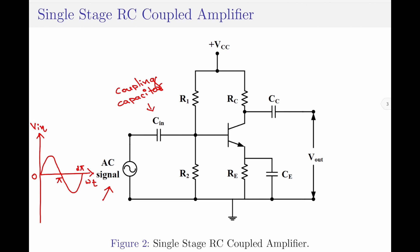The resistors R1 and R2 form the voltage divider network and help in proper biasing of the transistor. Coming to the resistor at the emitter, which is RE, this is connected for stabilizing the network.